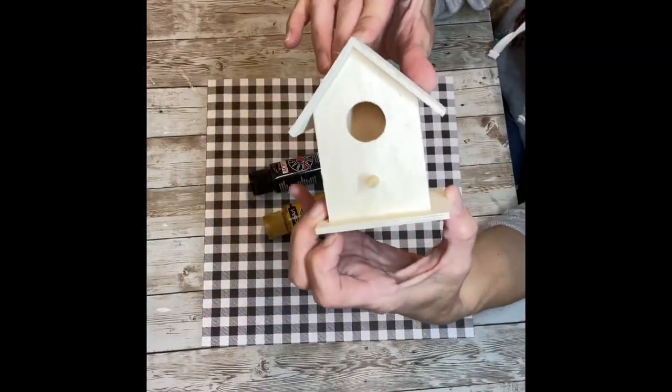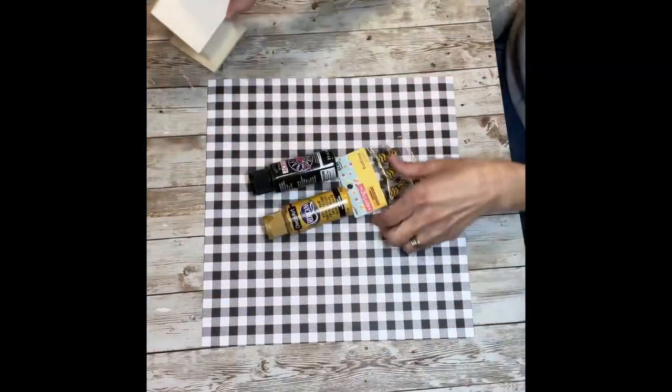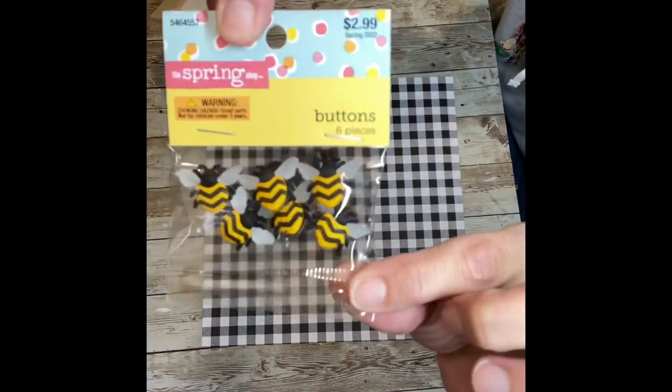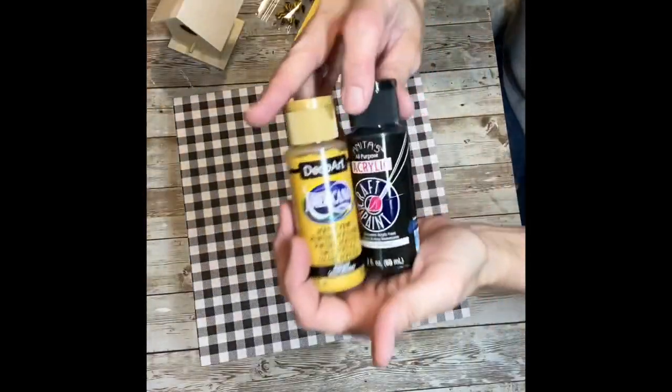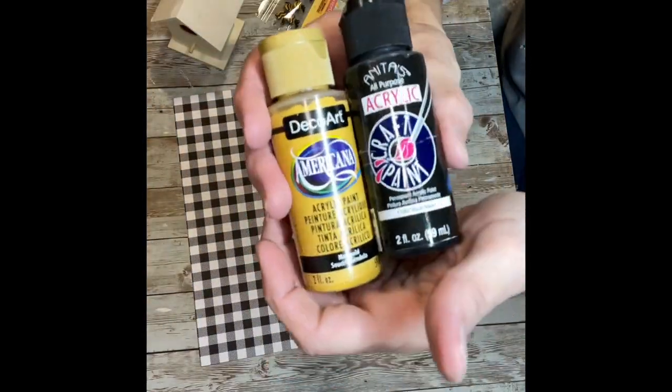Grab one of the little bird houses from Dollar Tree, some bees from Hobby Lobby in the spring department, some scrapbook paper with the buffalo check, and some yellow paint and black paint.